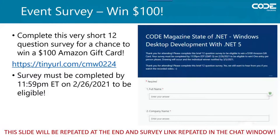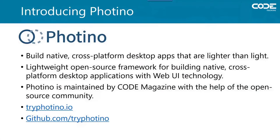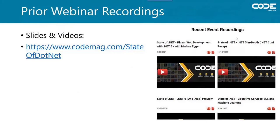We would like your feedback about this webinar in the form of a quick survey, and we're willing to pay $100 to one lucky winner. We're excited about a new open source project we've launched called Fotino. You can use it to build native, cross-platform desktop applications using web UI technology. It's like Electron, only smaller and more lightweight. Marcus will have more information about this later in the webinar.